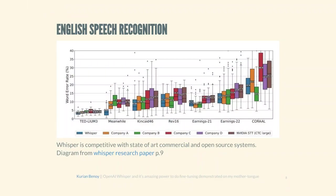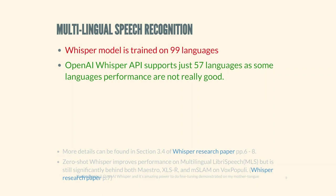If you look at the performance diagram, Whisper performs phenomenally well in English speech recognition. In the paper they described competitors as Company A, Company B, Company C. It has outperformed paid commercial alternatives, and it also outperformed NVIDIA STT. And it's not just for English — it was trained on 99 languages.